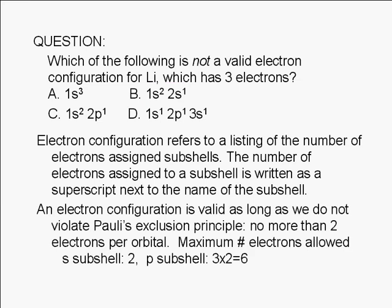An electron configuration is valid as long as we do not violate Pauli's exclusion principle. Pauli's principle says that no more than two electrons can be assigned per orbital. Therefore, since an S subshell consists of just one orbital, the maximum number of electrons that can be assigned to an S subshell is 2. A P subshell, on the other hand, consists of three orbitals. Therefore, the maximum number of electrons that can be assigned to a P subshell is 3 times 2, or 6.